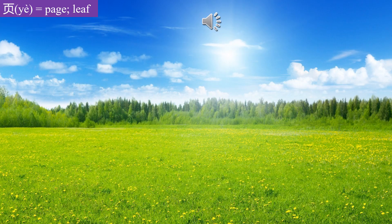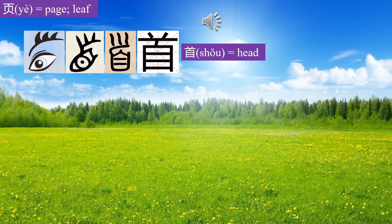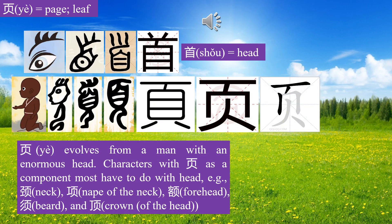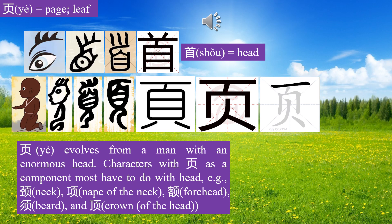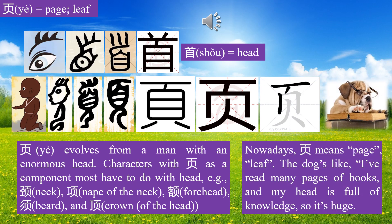Let's learn character Ye. We have learned character shou, meaning head. Ye evolves from a man with an enormous head. Characters with Ye as a component mostly have to do with head: Jing (neck), Xiang (nape of the neck), E (forehead), Xu (beard), Ding (crown). Nowadays, Ye means page or leaf.